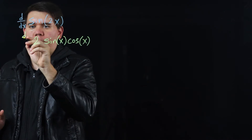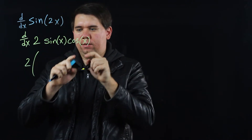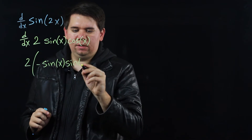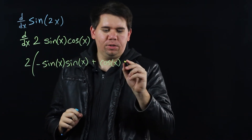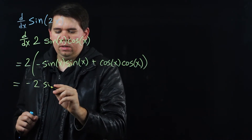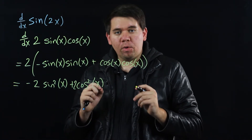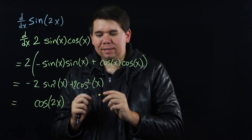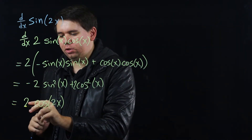So when we calculate the derivative, we get 2 times: hold the first, derive the second — keeping sine the same and multiplying by the derivative of cosine, which is negative sine x — plus keep the second the same and derive the first; the derivative of sine is cosine, so we get cosine times cosine. That gives us negative 2 sine squared x plus 2 cosine squared x. From our double angle formula for cosine, cosine of 2x equals cosine squared minus sine squared, so 2 cosine squared minus 2 sine squared equals 2 cosine of 2x.